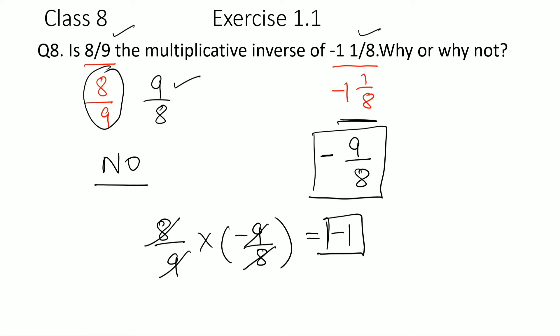And the definition of multiplicative inverse is that when you multiply it by its reciprocal you should get 1. We are getting -1. Therefore 8/9 and -1 1/8 are not the multiplicative inverse of each other.